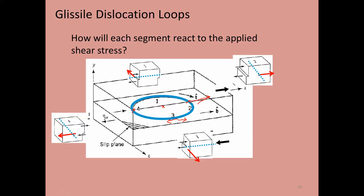Going through the same process, that edge dislocation wants to move outward, and the opposite one also wants to move outward. The end result: if I apply this shear stress in this direction, the whole loop will just grow. If the shear is reversed, the loop would shrink — and if small enough, it would annihilate.